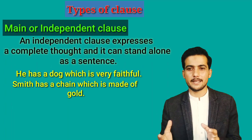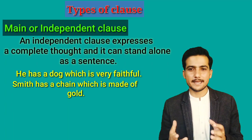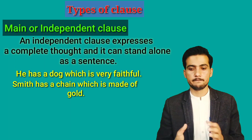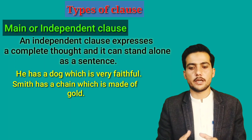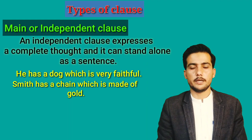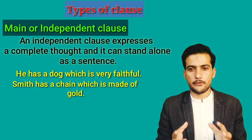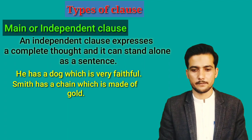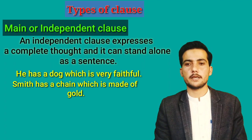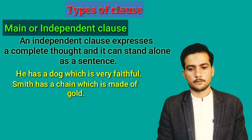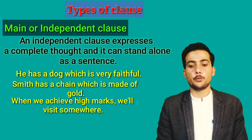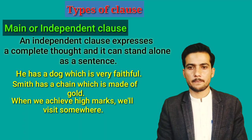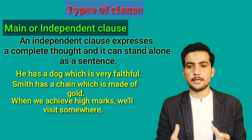'Which is made of gold' is the dependent clause because it cannot stand alone. If you say only 'which is made of gold,' you cannot get meaning from it. Another example: 'When we achieve high marks, we will visit somewhere' — 'we will visit somewhere' is the main clause, and 'when we achieve high marks' is the dependent clause.